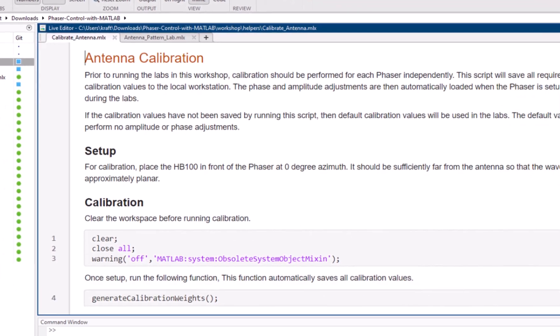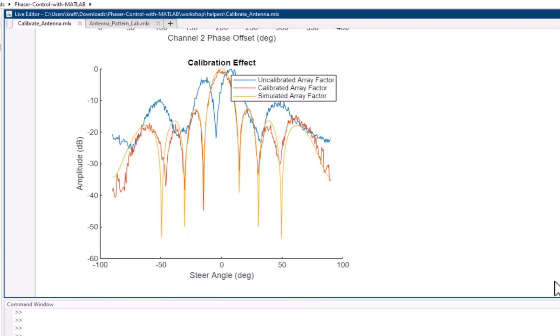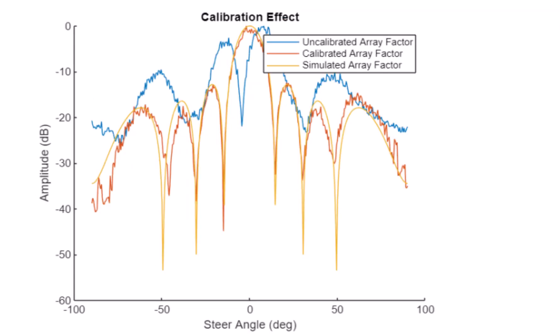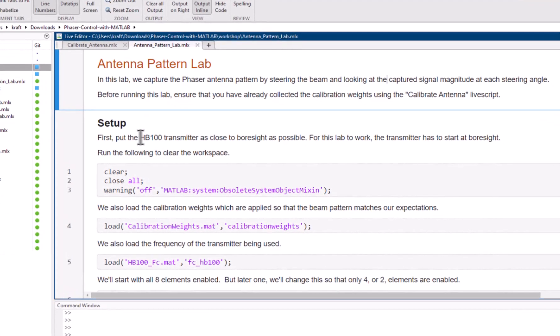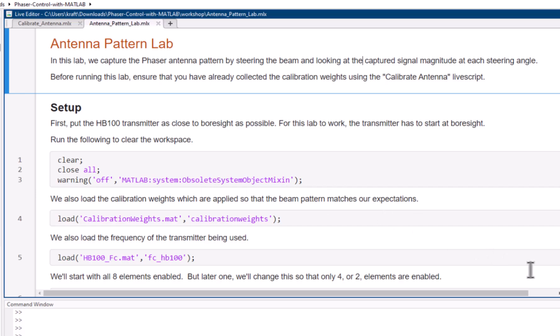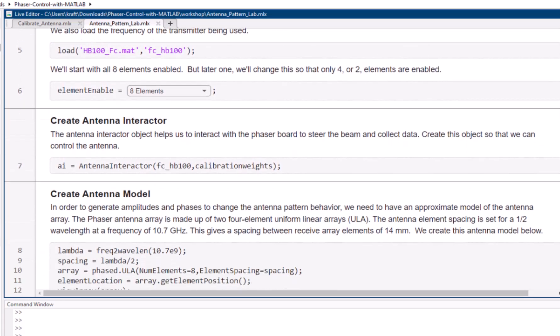Then navigate to that folder from within MATLAB. First, you want to run a phase calibration of the array. This really only needs to be done once, and there's a routine to do this in that GitHub folder. And you can see what the before and after plots look like for that calibration, as well as what the theoretical ideal array factor would be. Then to run the example in this video, open up the MATLAB live scripts called Antenna Pattern Lab.